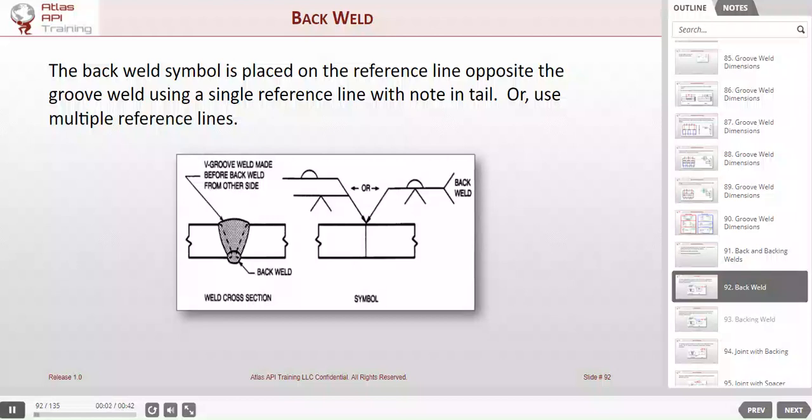The back weld symbol is placed on the reference line opposite the groove weld using a single reference line with a note in the tail, or use multiple reference lines. See the different examples here.